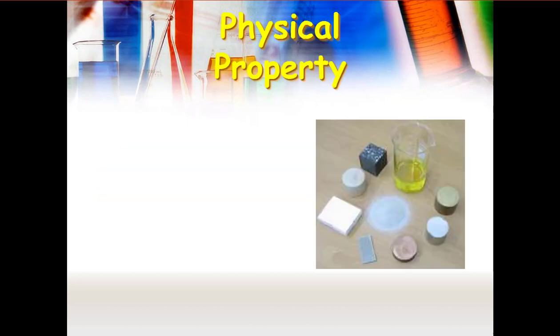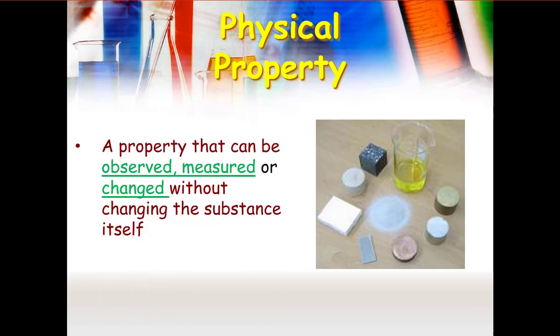Now a property. Let's talk about physical properties. A physical property is something that can be observed, measured, or changed without changing the substance itself. So a property is like a characteristic, something we can use to describe something. I am a human male. I'm 6'5". Those are properties of who I am. So when we talk about physical properties, we're going to use those to describe the substance. A physical property you can observe, you can measure, it doesn't change the substance itself.